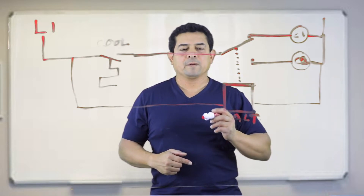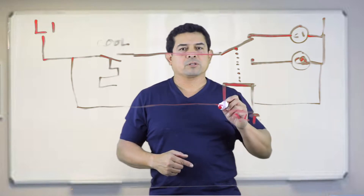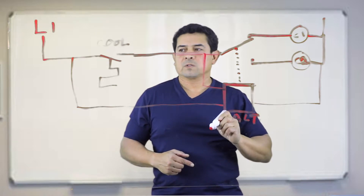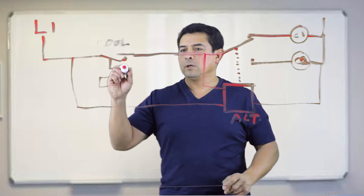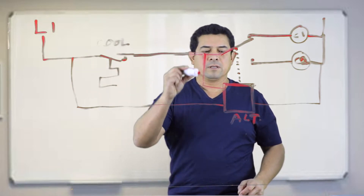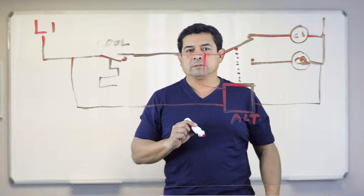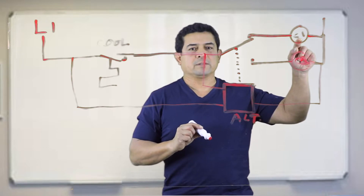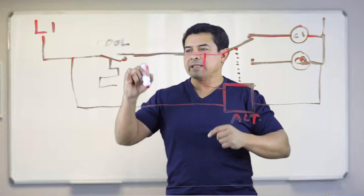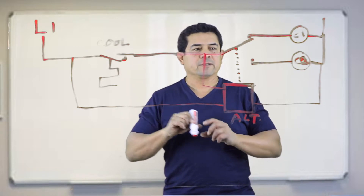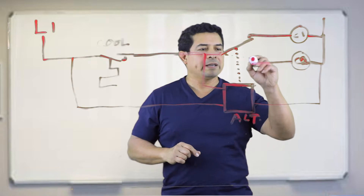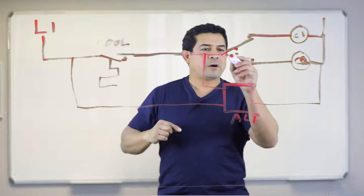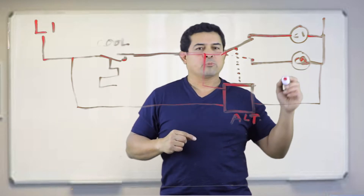At the same time, we need to let it know that the compressors are running. So we're going to have to have a power supply like this. When our cooling thermostat calls, power is going to travel through here and send the alternating relay a signal so that it knows that the compressor is running. The compressor is going to run. Once this satisfies, it's going to turn power off and this relay is going to move down here. So when it calls for cooling again, power is going to go through here and run compressor number two.